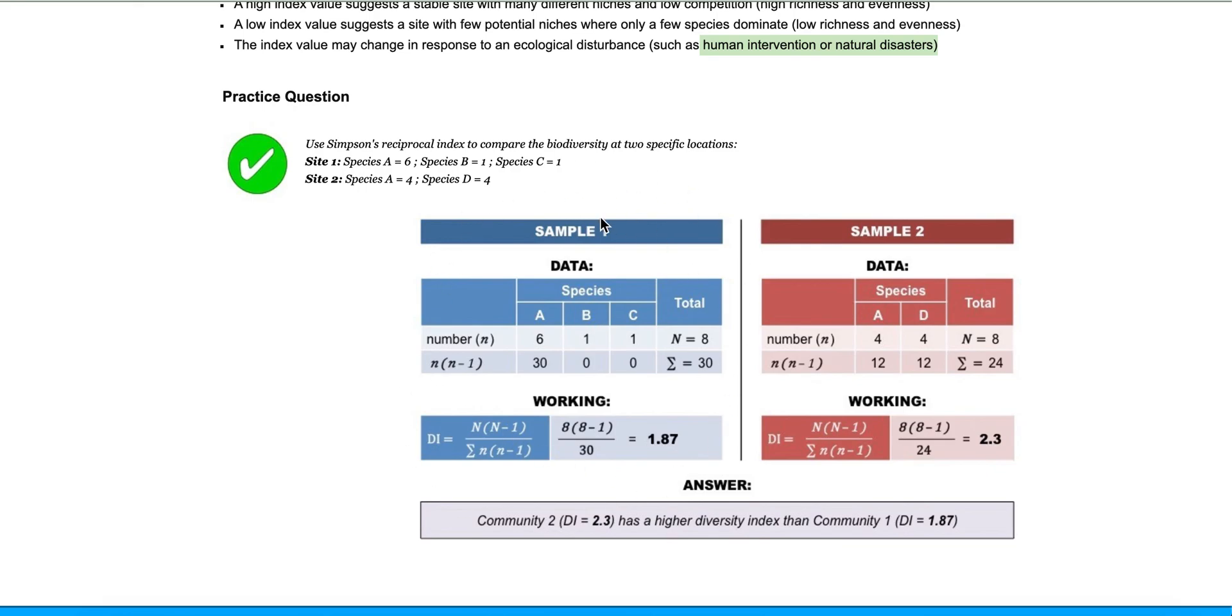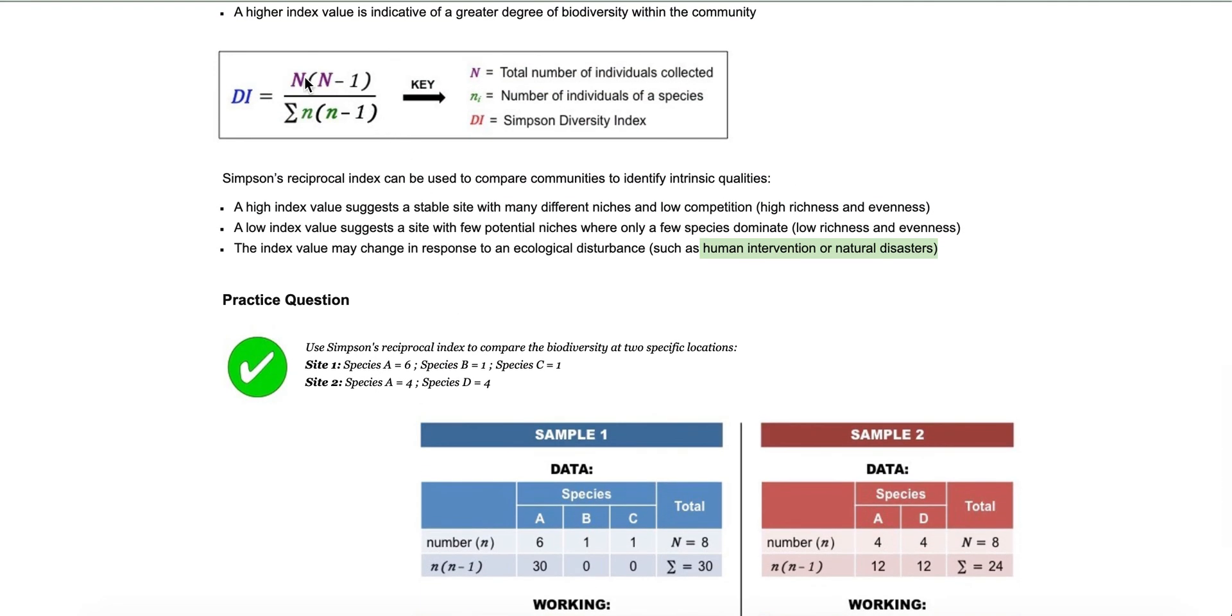So this would be site one, and you would calculate it just this way. So the formula, remember, you have two Ns. The capital N is the total numbers of individuals collected. And the lowercase n is the total number of individuals of a specific species. So this bottom part of the equation is looking at individuals within a species, where the top part of the equation is looking at the total numbers of individuals found at that site or that ecosystem.